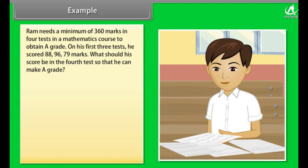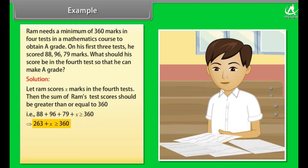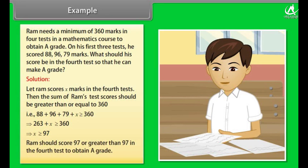Example: Ram needs a minimum of 360 marks in 4 tests in a mathematics course to obtain an A grade. On his first 3 tests, he scored 88, 96, and 79 marks. What should his score be in the 4th test? Let Ram score x marks in the 4th test. The sum of scores should be ≥ 360: 88 + 96 + 79 + x ≥ 360, which implies 263 + x ≥ 360, so x ≥ 97. Ram should score 97 or greater in the 4th test to obtain an A grade.